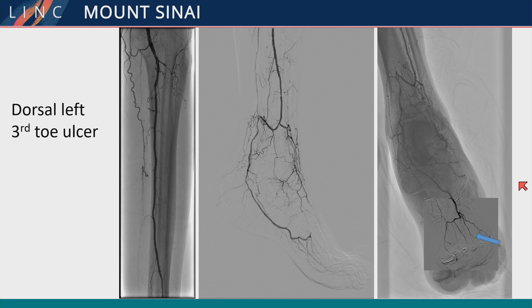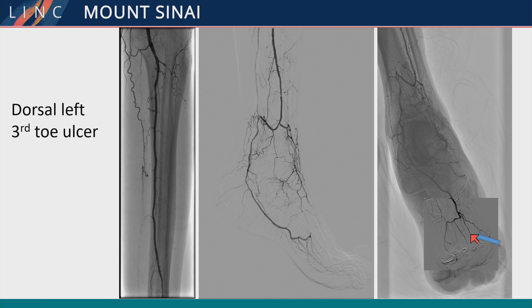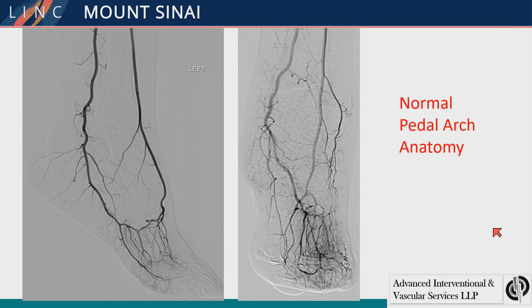Here's a patient with a distal left third toe ulcer, showing that when you have these peroneal continuations — either as anatomic variations or as acquired states due to underlying occlusive disease — they can provide robust supply to areas of wound. After recanalization of the peroneal artery, you might think to target the posterior tibial or anterior tibial artery for a dorsal left third toe ulcer, but when you do the angiogram and open the peroneal, you see it has a very robust collateral into the pedal arch down to the area of the wound. Understanding these anatomic variations — both pathologic and normal — is critically important.